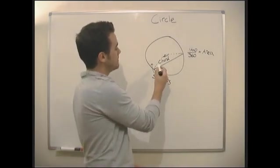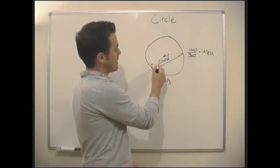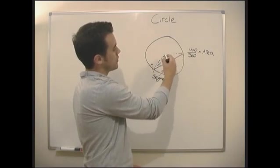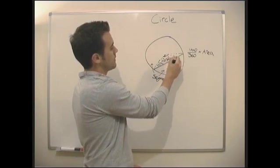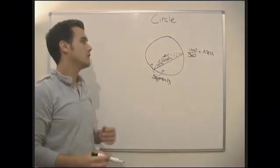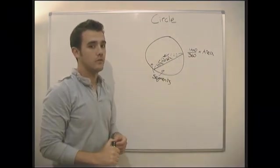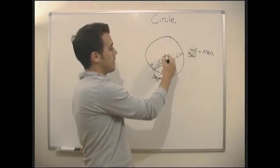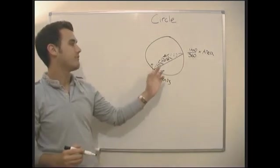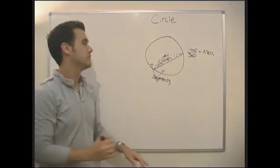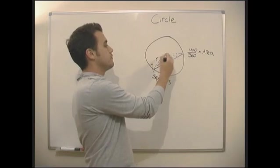Then we need to take away the area of this triangle here. You can see we've got an isosceles triangle here. And how do we work out the area of the triangle? It's a half the base times the height. And we don't have the base or the height given to us. We just know the radius.